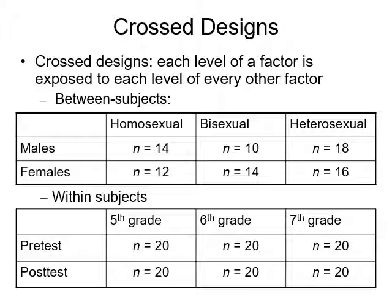In a between-subjects design, for example, we might look at males versus females and then look at their scores — whether they're homosexual, bisexual, or heterosexual. If you're a male bisexual in a group of 10, those are 10 unique people that are not exposed to any other condition. So we're looking at the differences between subjects — how people differ in their score on the outcome based on their membership in the two IVs.